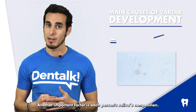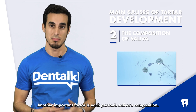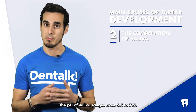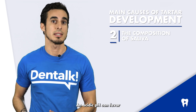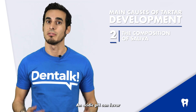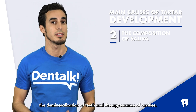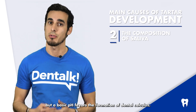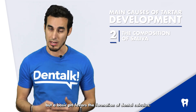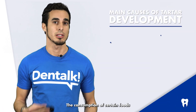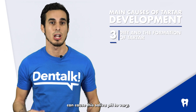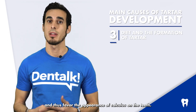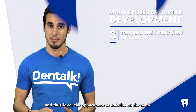Another important factor is each person's saliva composition. The pH of saliva ranges from 6.5 to 7. An acidic pH can favour the demineralisation of teeth and the appearance of cavities, but a basic pH favours the formation of dental calculus. The consumption of certain foods can cause the saliva pH to vary and thus favour the appearance of calculus on the teeth.